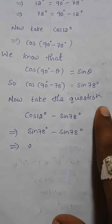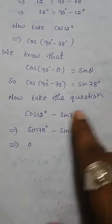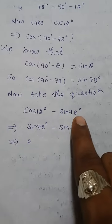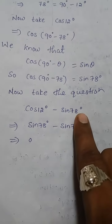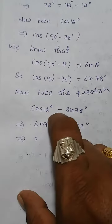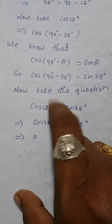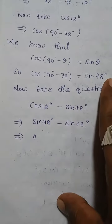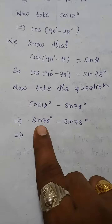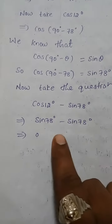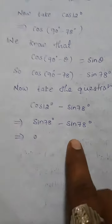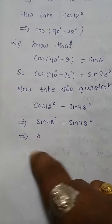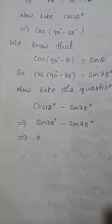Now take the given question: cos of 12 degrees minus sin of 78 degrees. We calculated that cos 12 equals sin of 90 minus 78, which is sin of 78 degrees. So the expression becomes sin of 78 degrees minus sin of 78 degrees — both get cancelled. The answer is 0.